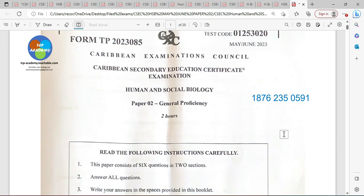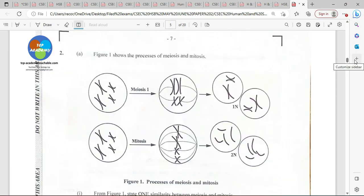Here we go. The number is 1-8-7-6-2-3-5-0-5-9-1. Please, only business. For non-business, please send me your message via YouTube. Number two, that's where we're going to start for this video presentation. The others will come later.